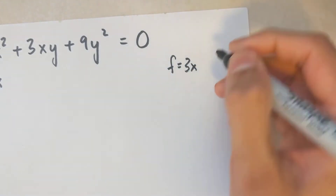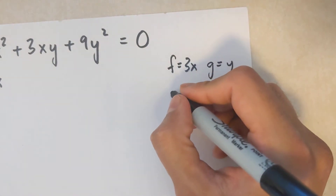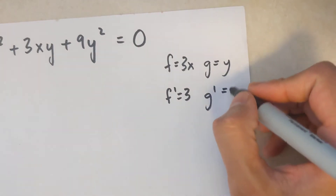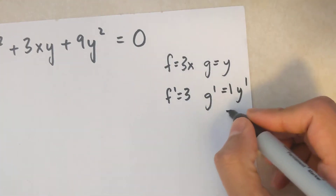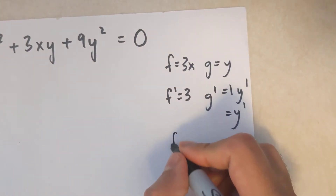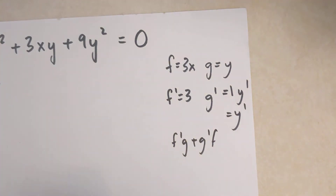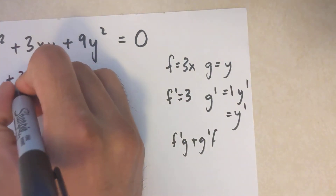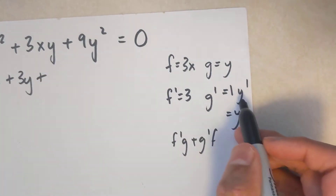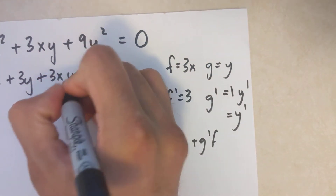I'll make f equal to 3x and g equal to y, so f prime is 3 and g prime is y prime. Then I'll substitute into f prime g plus g prime f: f prime g is 3y, and g prime f is y prime times 3x, so that's 3xy prime.